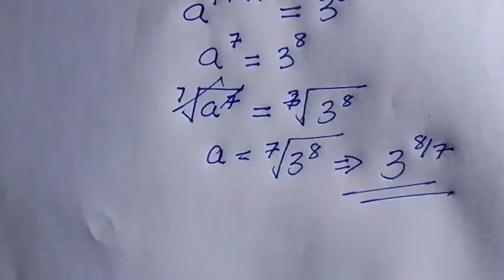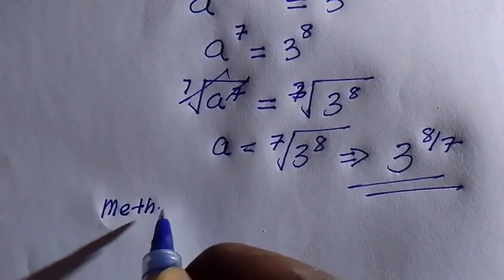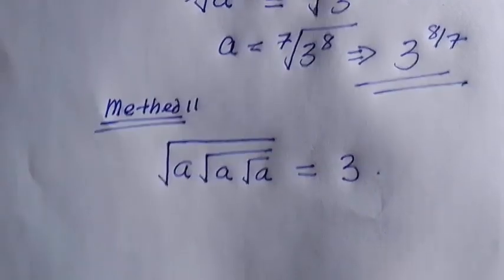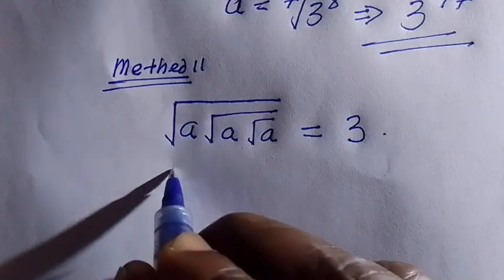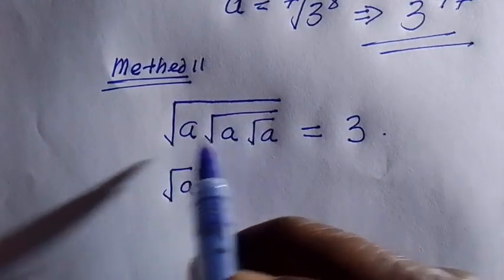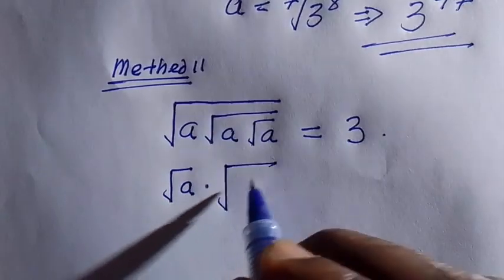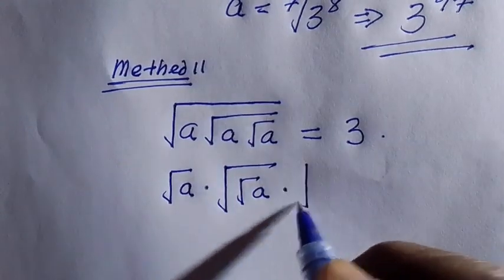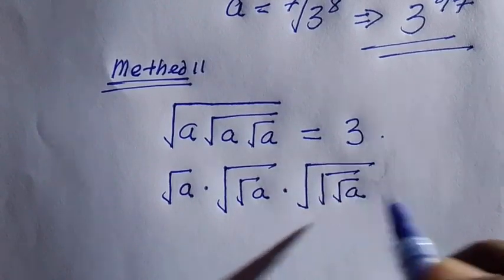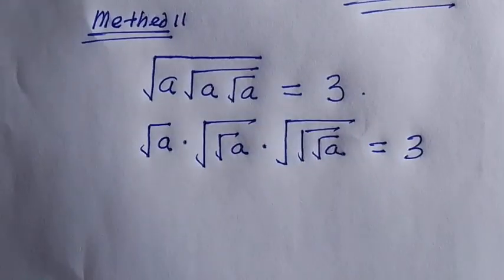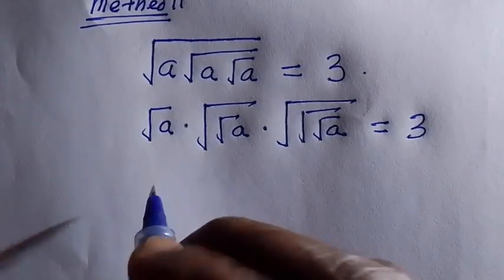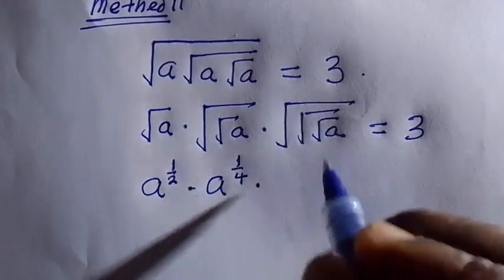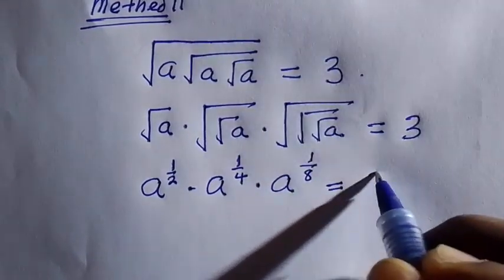And again we have method 2, which is also an efficient method. From the given problem we can separate it as: the first one which is a, we can write as root a; then the root inside it, already covered by a bigger root, we write as root of root a; while the last one is covered by two different roots, making 3, so we write it as root of root of root a equals 3.